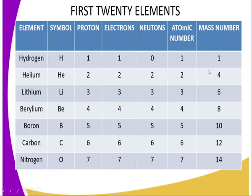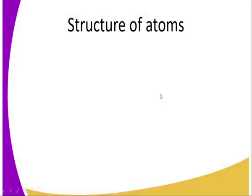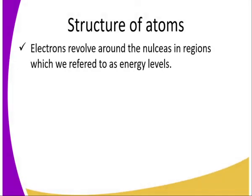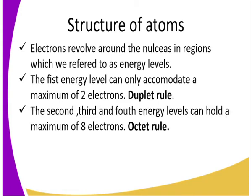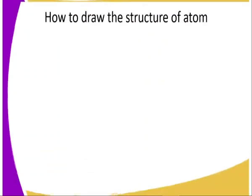To draw the structure of atoms, remember the following: electrons revolve around the nucleus in regions called energy levels. The first energy level can hold a maximum of two electrons — this is the duplet rule, 'duplet' meaning two. The second, third, and fourth energy levels for the first 20 elements can hold a maximum of eight electrons — this is the octet rule. Keep these rules in mind.